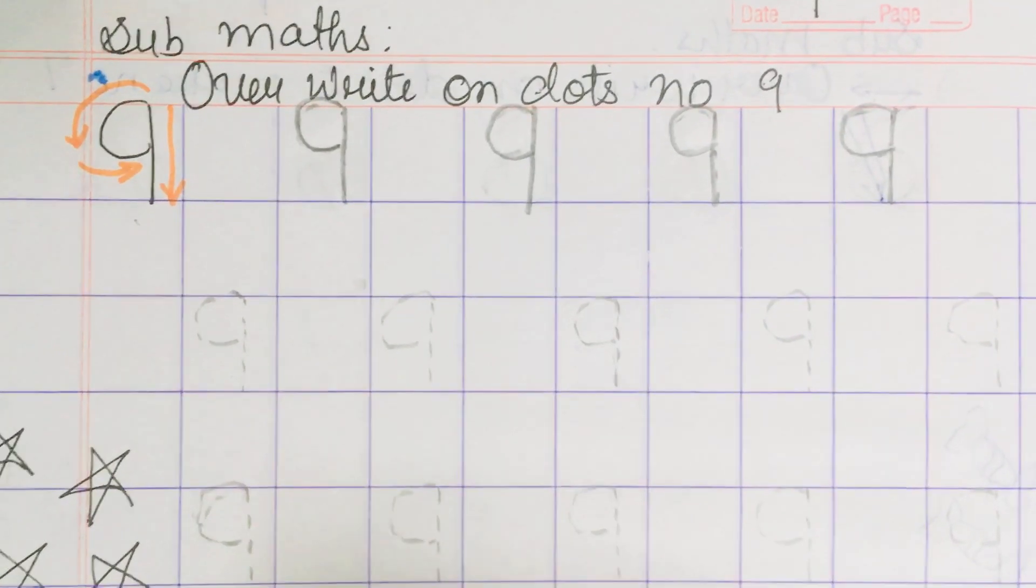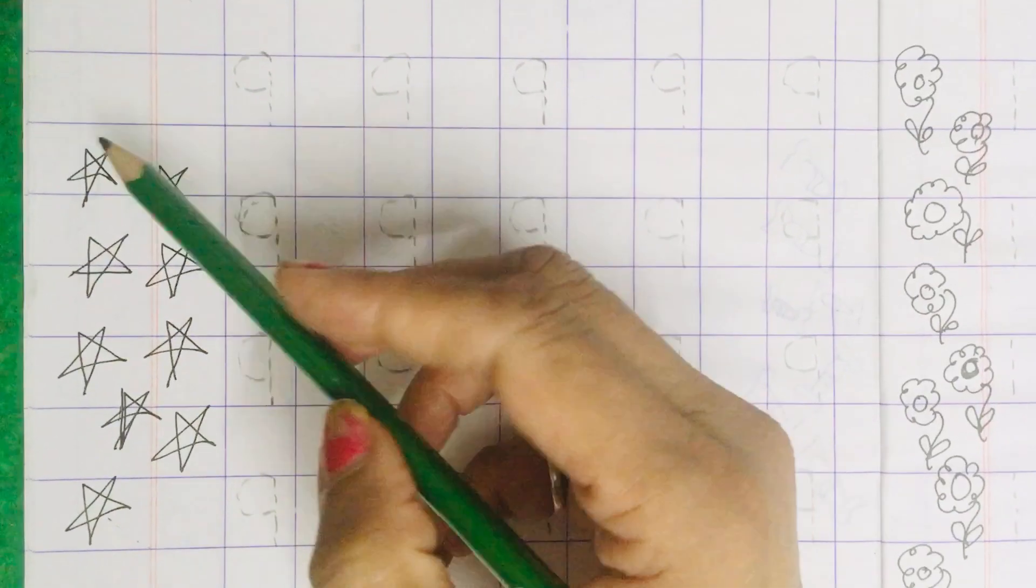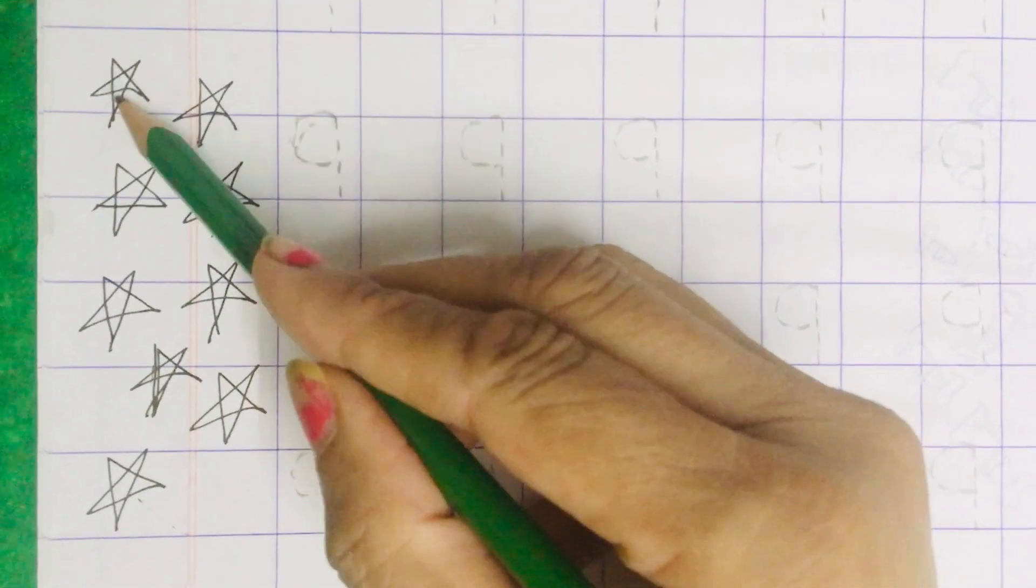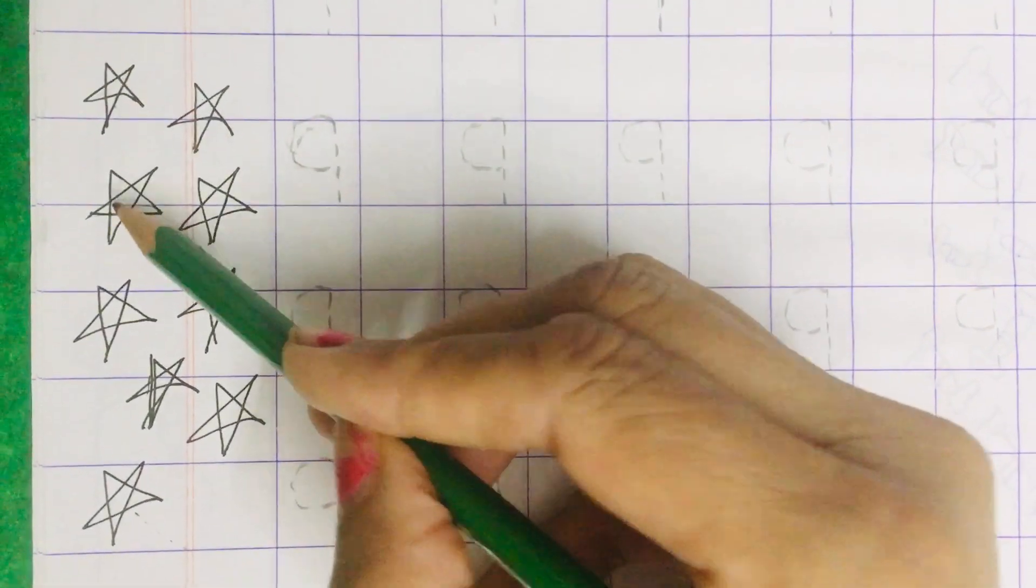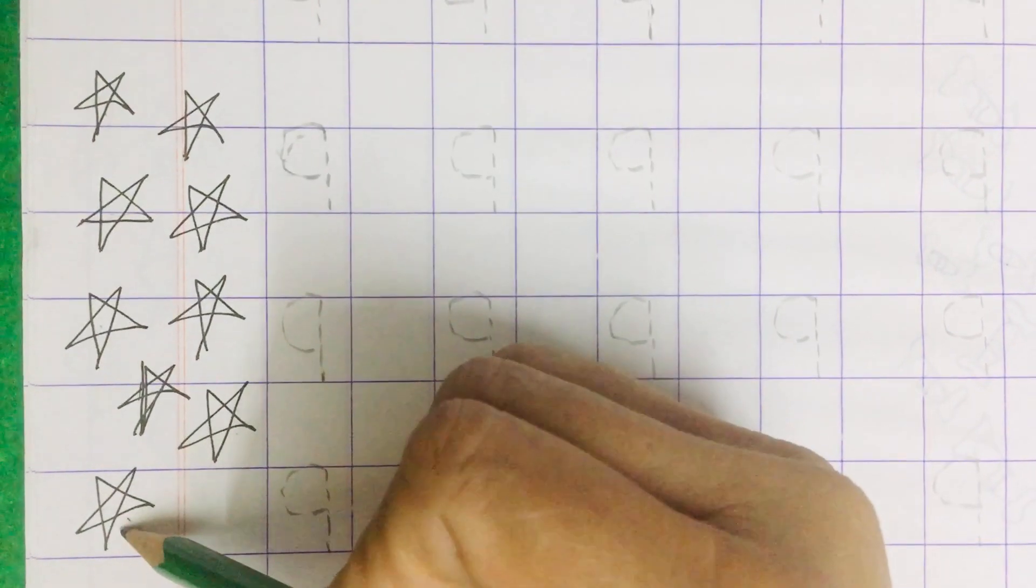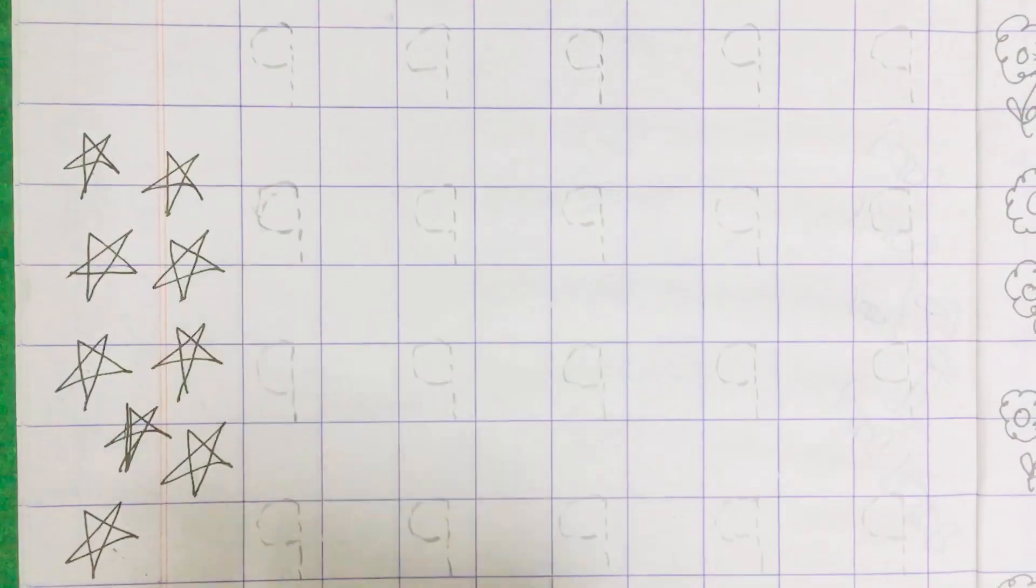Now there are some stars. What are these? These are stars. I will teach you how to count them. Count along with me: 1, 2, 3, 4, 5, 6, 7, 8, and 9. This is number 9. So how many stars are there? There are 9 stars.